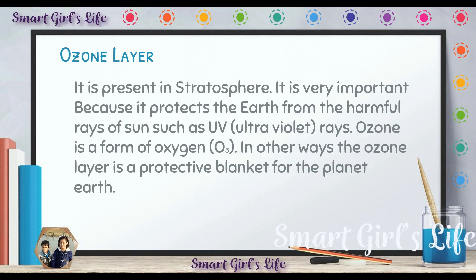So these are the basic things about the ozone layer: it is present in the stratosphere, it is very important, it protects the Earth from the harmful rays of the sun. One example of the harmful rays is UV ultraviolet rays. Ozone is a form of oxygen, O3, and in easy words the ozone layer protects the planet Earth.